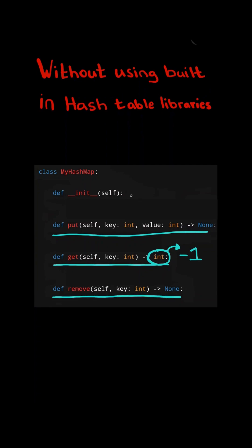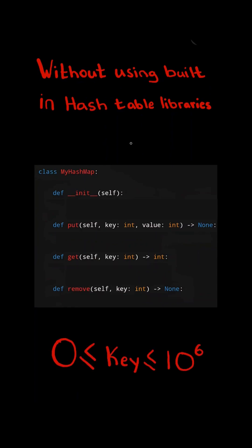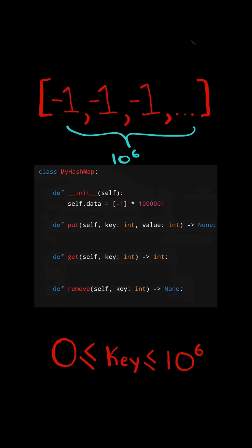And we must be able to remove the key and its corresponding value from the map. Now the constraints of this problem are that the keys are between the range 0 and 10 to the 6 inclusive. So realistically, we could just initialize an integer array of length 10 to the 6 in the constructor. We initialize all the elements in the array to negative 1, and the keys will resemble the indices.